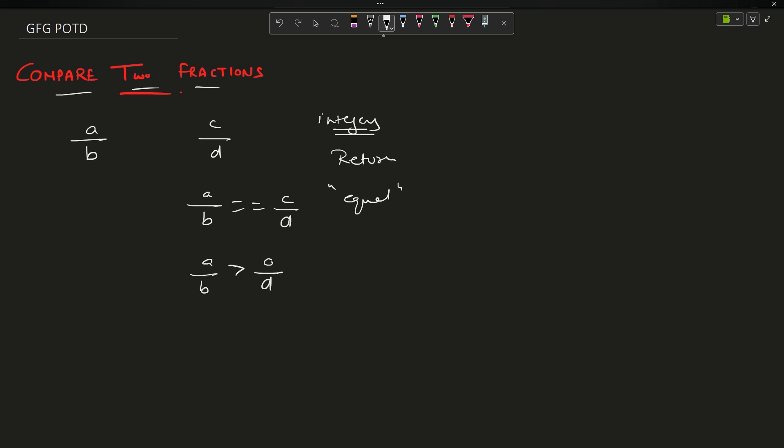If a by b is greater than c by d, return the two string fractions in that format. Suppose a by b is less than c by d, in that case return c by d. You have been given two fractions and you have to return them.